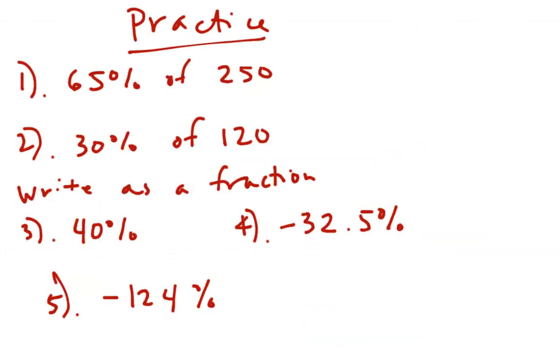Okay, here are your five practice application problems. Number one, 65% of 250, so calculate that, finding the percent of a number. 30% of 120. So that was the first part of our lesson, key information. Then we're rewriting percents as fractions. 40%, negative 32.5%, and negative 124%. So have those ready when you come to class. Do your wrap-up. And I will say goodbye.